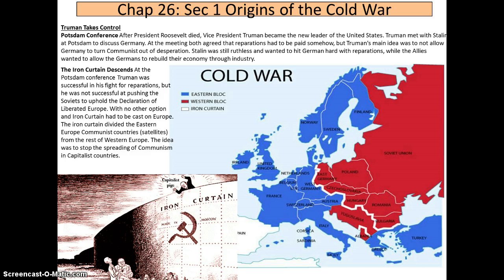The Iron Curtain is a figure of speech — you can see it on the map to the right. It's basically an idea, not a real wall, though there is the Berlin Wall. At the Potsdam Conference, Truman was successful in his fight for reparations but was not successful at pushing the Soviets to uphold the Declaration of Liberated Europe. With no other option, the Iron Curtain had to be cast on Europe, dividing Eastern European communist satellite countries from Western Europe.